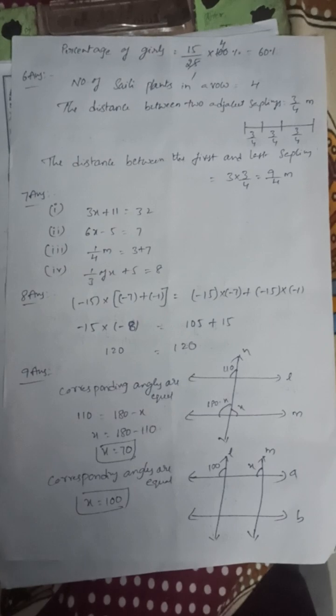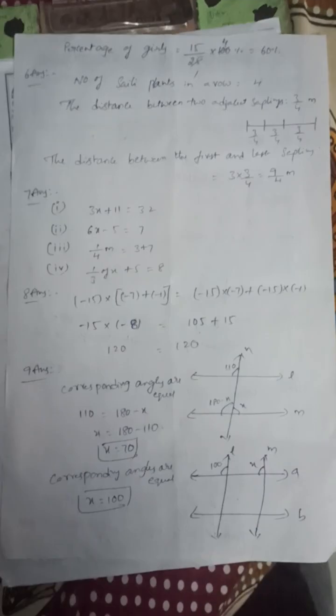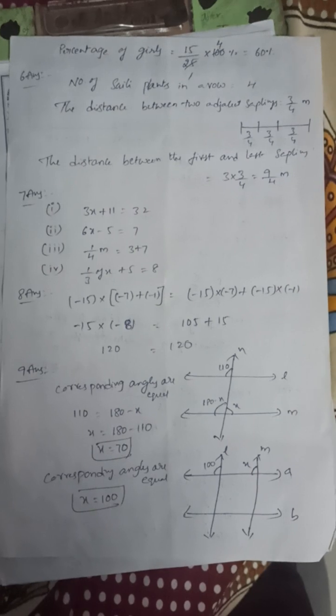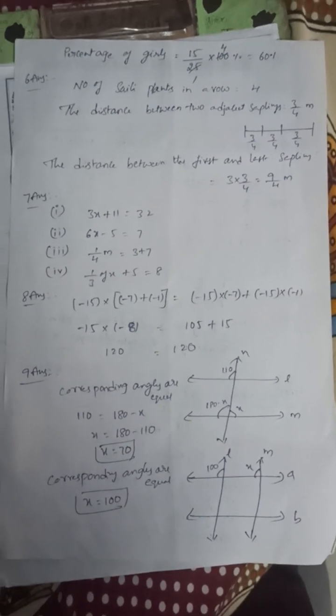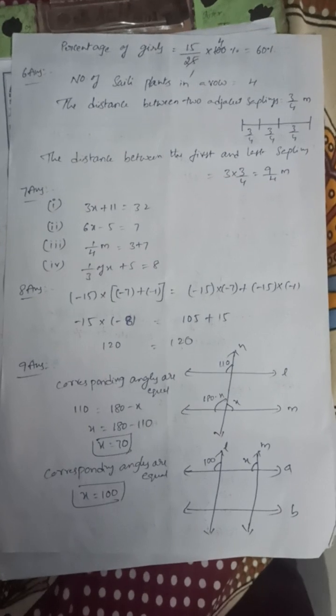Next, ninth one: Here corresponding angles are equal. So 110 equals 180 minus x. So x equals 70. Corresponding angles are equal in the second one. That is x equals 100.